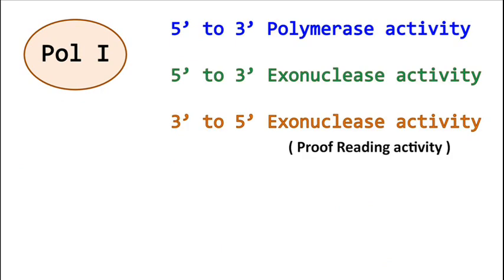The DNA Polymerase I has three major activities. Number one, five prime to three prime DNA polymerization activity. Number two, five prime to three prime exonuclease activity. And number three, three prime to five prime proofreading activity.